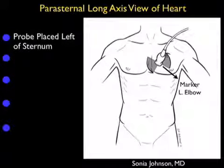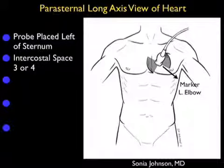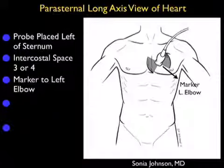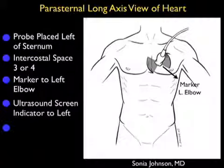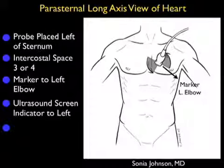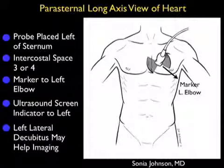For this examination, it's optimal to use a small footprint phased-array type probe that can easily sit between the ribs. We're going to place the probe just left of the sternum at about intercostal space three or four, with the marker dot on the probe aimed down towards the patient's left elbow if the patient's left elbow is down by the side. That's with the caveat that the ultrasound screen indicator would be over towards the left of the screen. This will align the probe in the long axis of the heart.